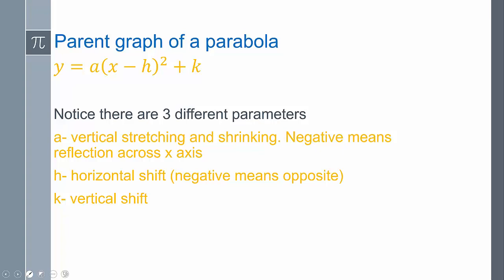Here's the parent graph of a parabola: y = a(x - h)² + k. There are three different parameters within this function, and we examined that a little bit in chapter one. We looked at h as a parameter, but there are going to be three parameters.